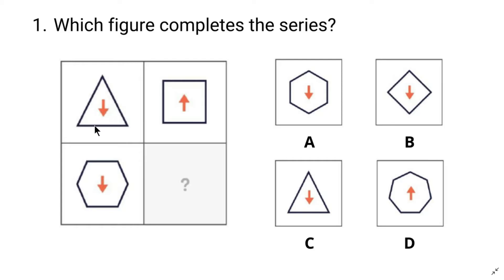The first element we are going to focus on is the arrow. In the first row, the first image has a downward arrow and the second image has an upward arrow. In the second row, the first image has a downward arrow, so we can assume there should be an upward arrow in the second image. Looking at the answers, we can see only D has an upward arrow, so D should be the answer.